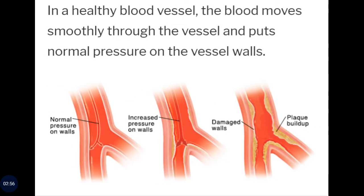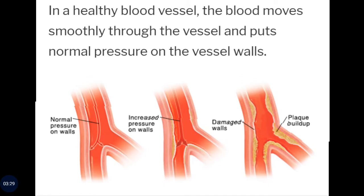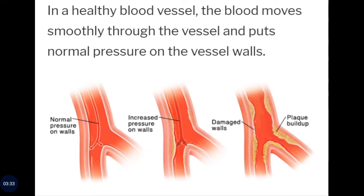The normal systolic pressure value is 120 mmHg. In the diagram, the first diagram shows normal pressure on the wall with blood passing and creating pressure. The second diagram shows increased pressure on the wall where the lumen size affects the pressure. For a normal person, the systolic pressure value is 120 mmHg.